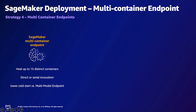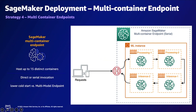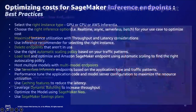The next strategy is multi-container endpoints. With multi-container endpoints, you can deploy up to 15 containers with diverse ML frameworks and functionalities with no cold starts, saving costs on a single SageMaker endpoint. You can directly invoke these containers, and it's best used when you want to keep all models in memory. Additionally, you can use serial inference pipelines to chain up to 2 to 15 different containers onto a single SageMaker endpoint — suitable when you want to combine pre-processing, model inference, and post-processing within a single endpoint, with lower latency since all containers are on the same instance.